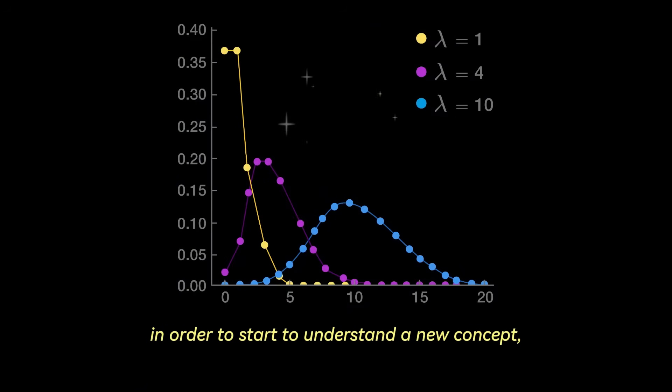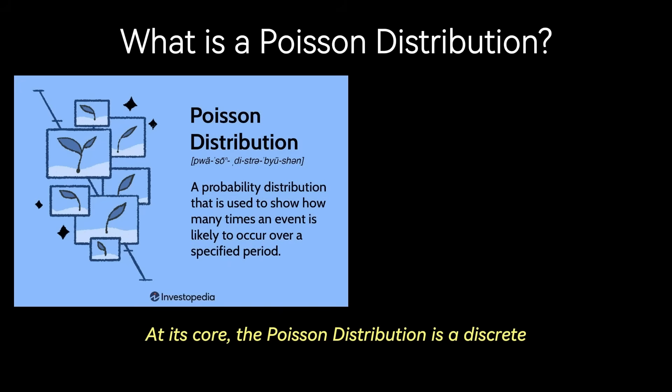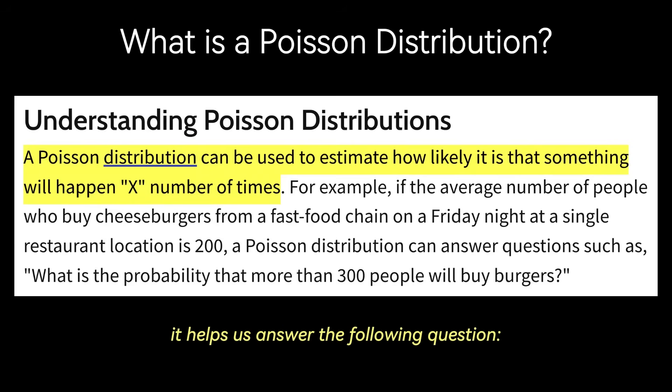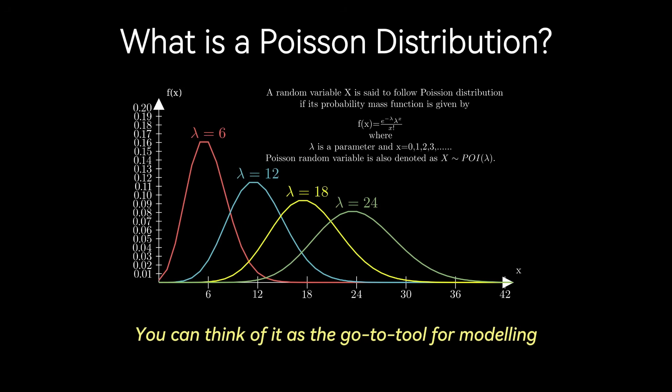Now as always, in order to start to understand a new concept, you want to begin with a concrete definition. At its core, the Poisson distribution is a discrete probability distribution. Discrete just means that it deals with outcomes that are countable, rather than measurable on a continuous scale like height or weight. Specifically, it helps us answer the following question: What is the probability of a given number of events happening in a fixed interval of time or space if these events occur with a known constant average rate, and independently of the time since the last event?